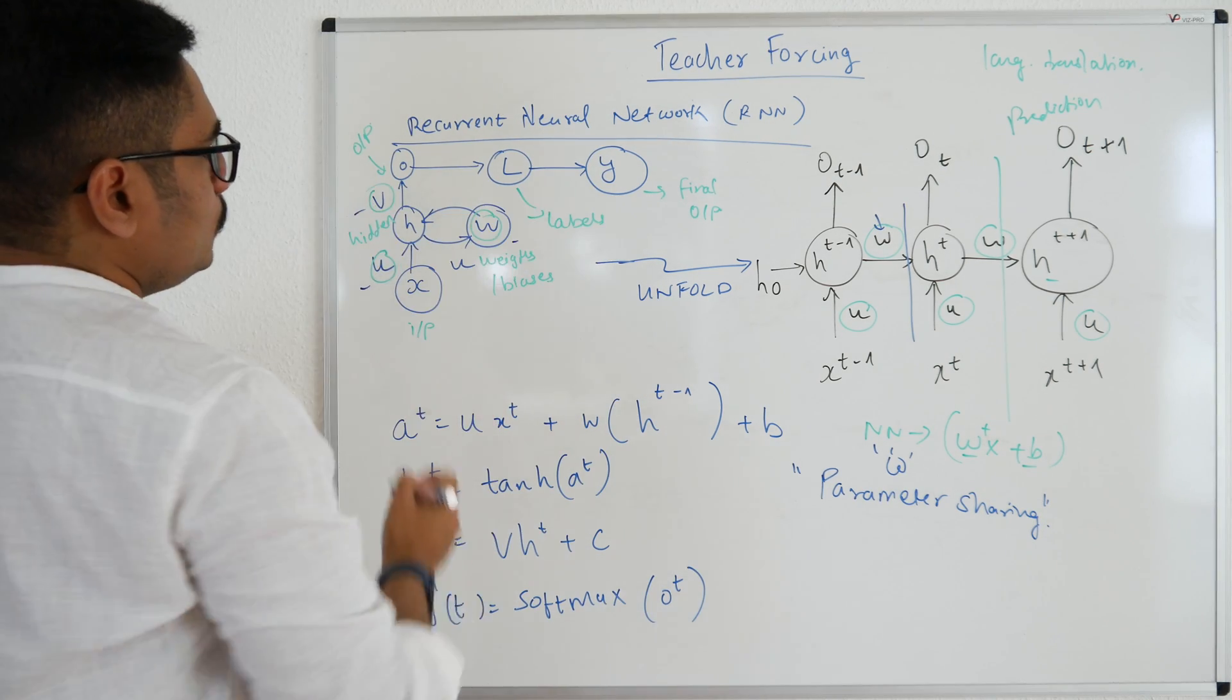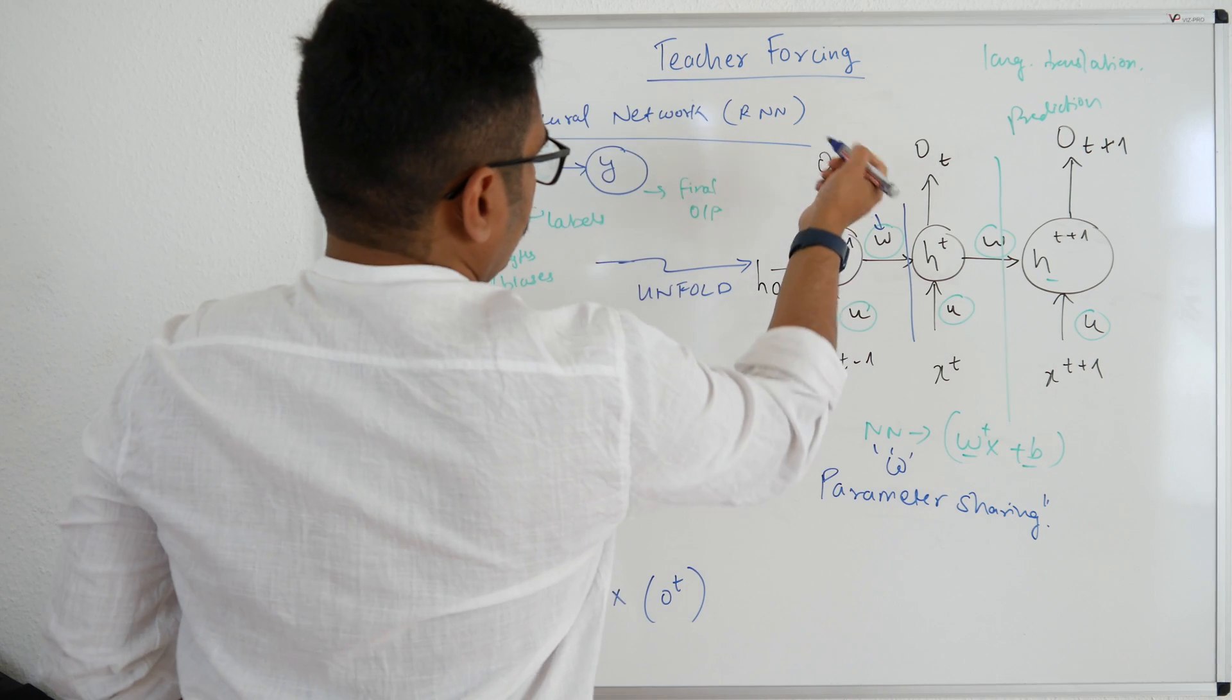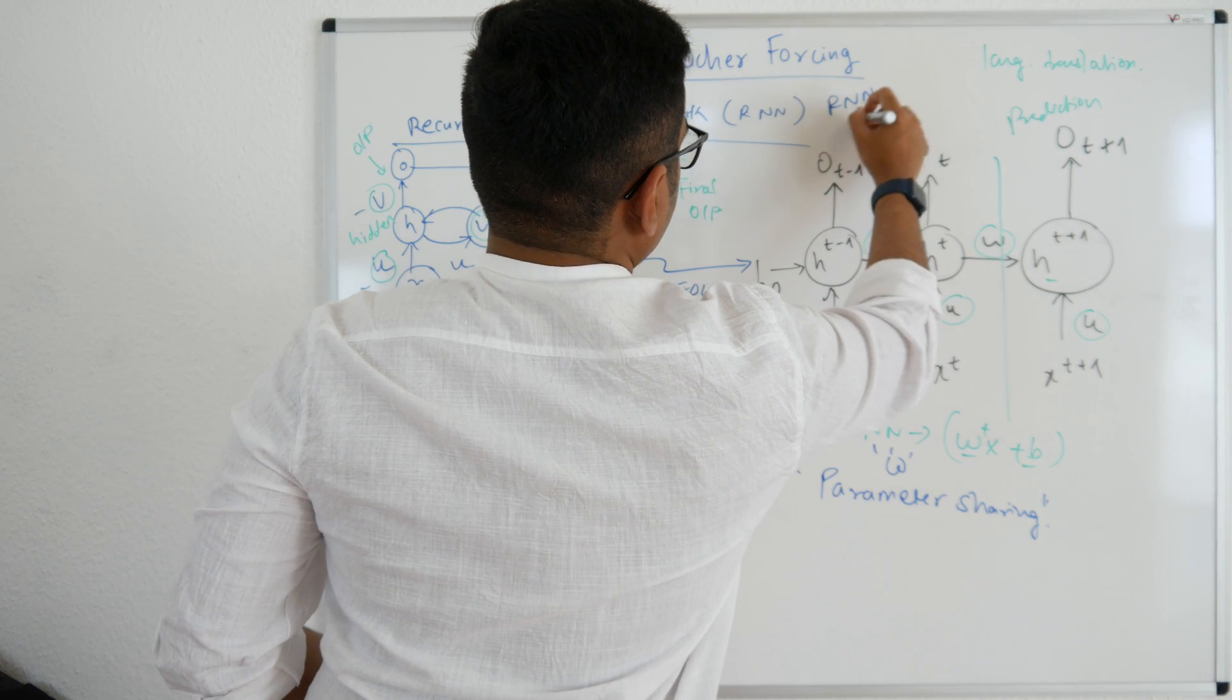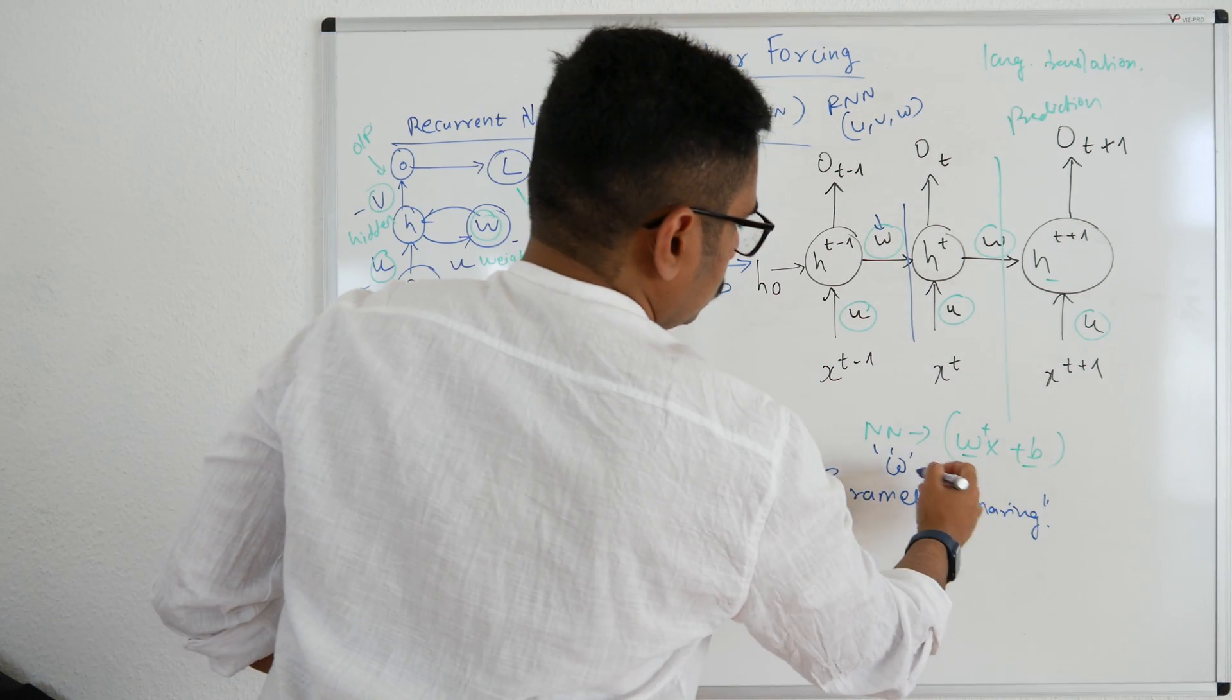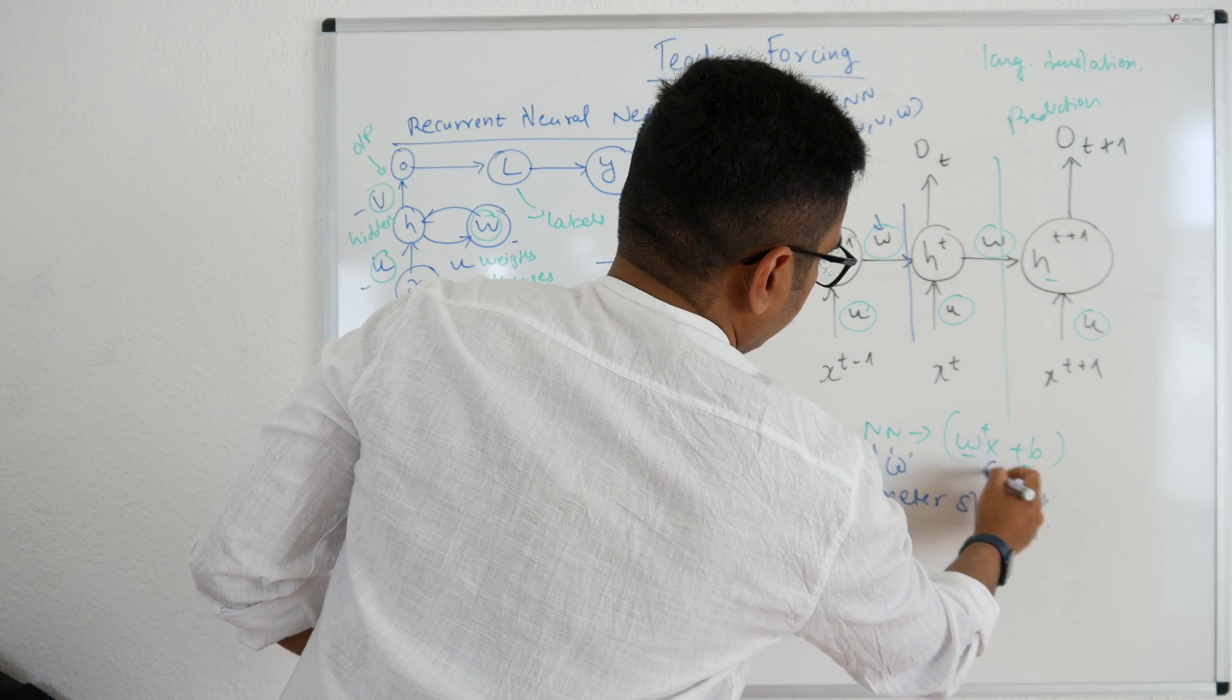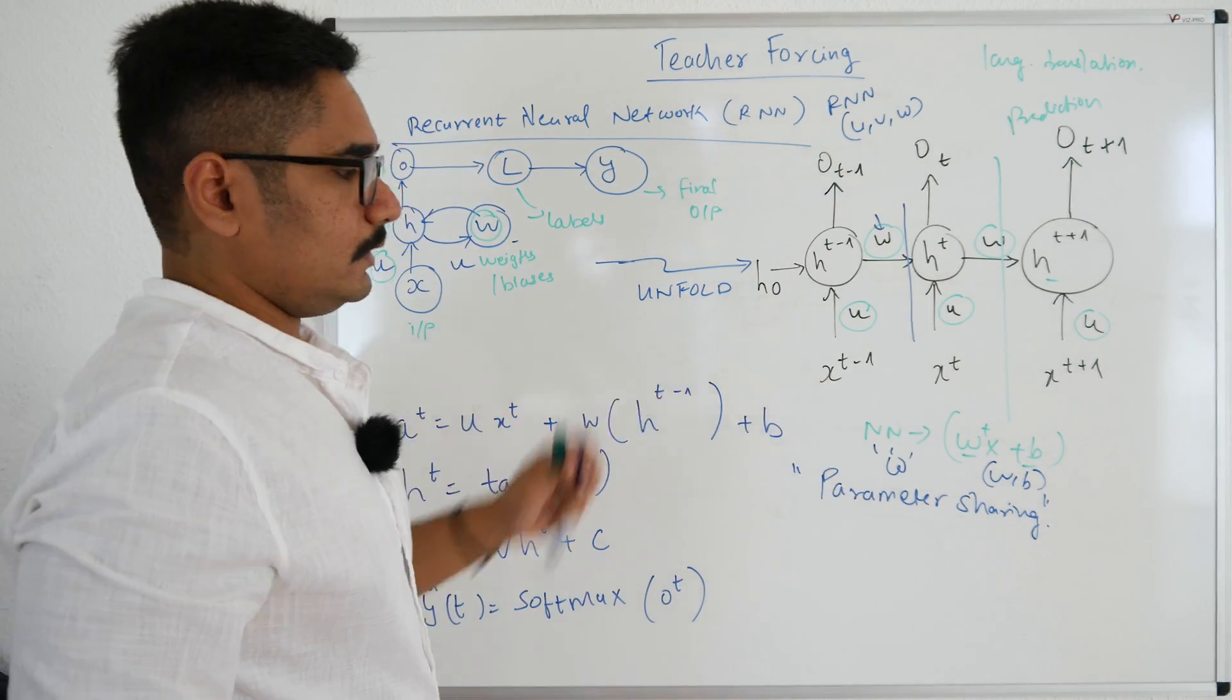So that is a simple scenario where this parameter sharing can be helpful. That is the reason why you have U, V, W weights. So whenever you have a RNN, you have U, V, W triplets defined as weights, but with simple neural networks, you have this W and B, that is weights and biases for the training.